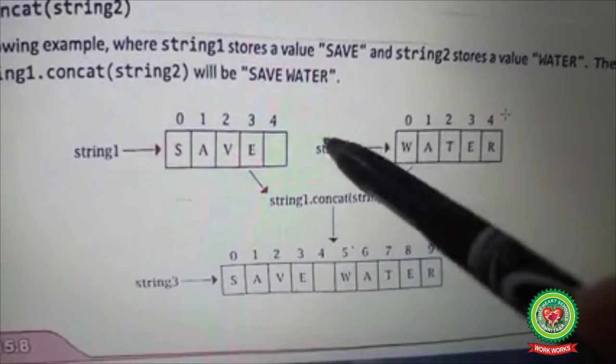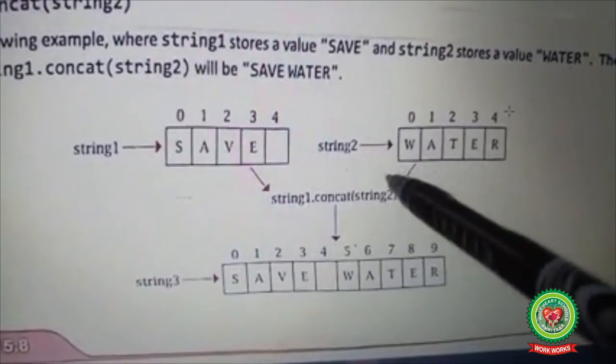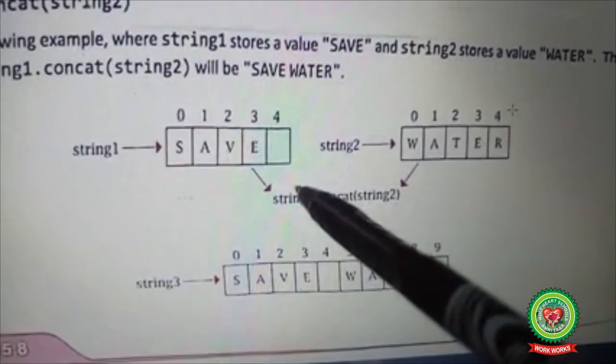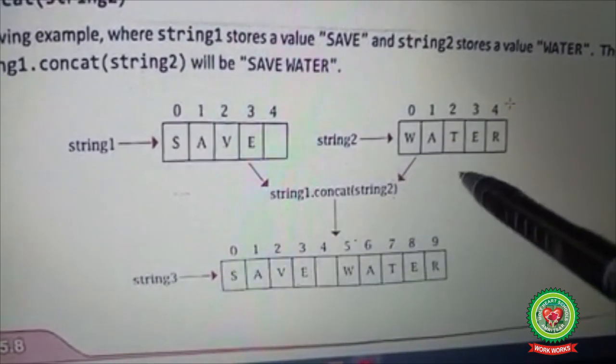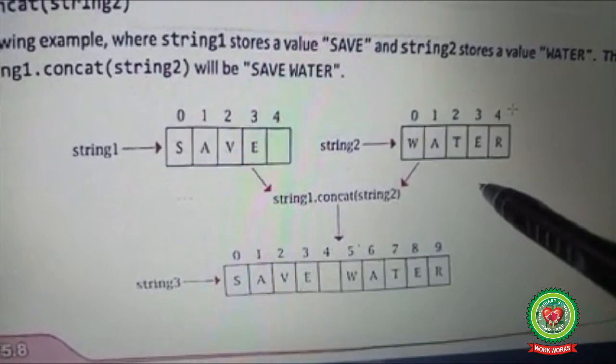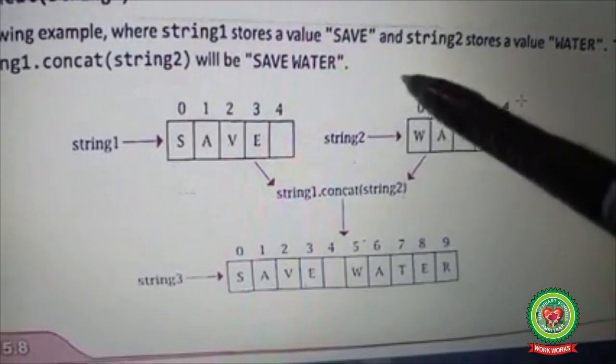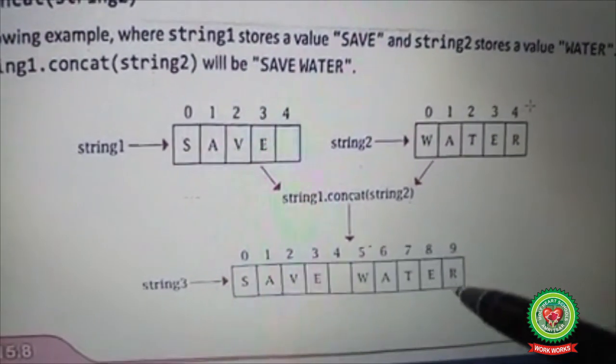This is string1 'save' having a total of 5 characters. This is string2 'water' having a total of 5 characters. So 5 plus 5 is 10.